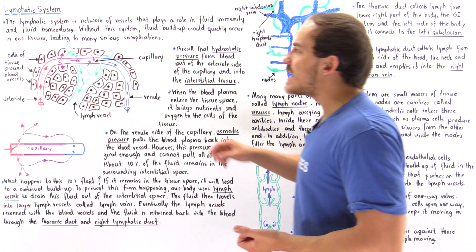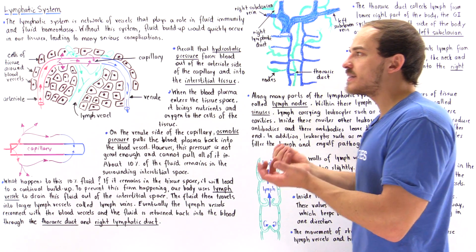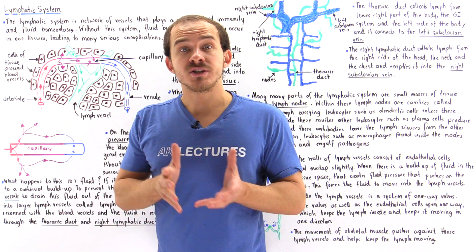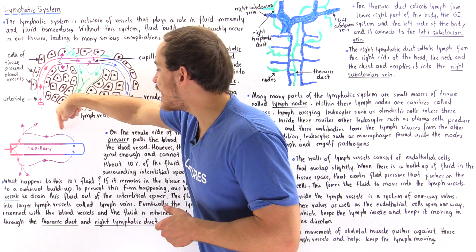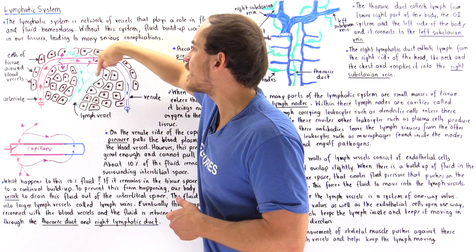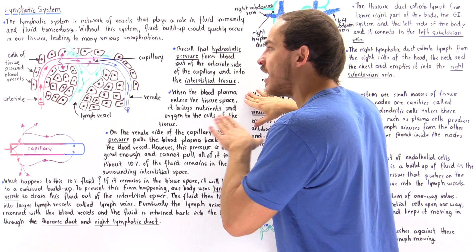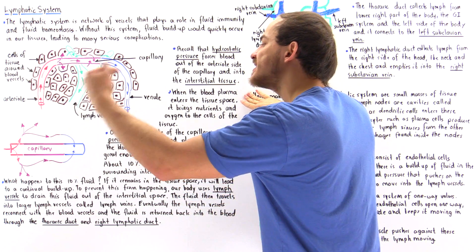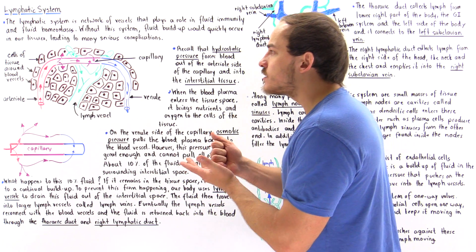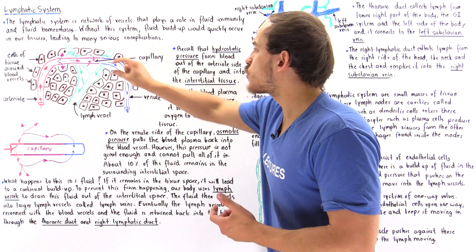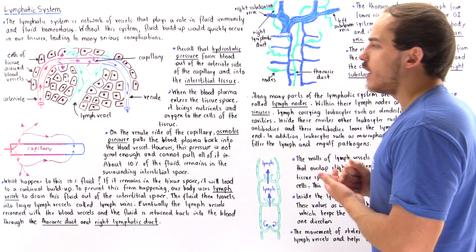At the same time, as that fluid travels along the interstitial tissue, it picks up waste products secreted by the cells, such as carbon dioxide and ammonia. Once the fluid is on the venule side of the capillary, the osmotic pressure is now greater than the hydrostatic pressure, so the blood rushes back into the capillary. The deoxygenated blood containing waste products then travels along the venule, into the veins, and finally into the heart.